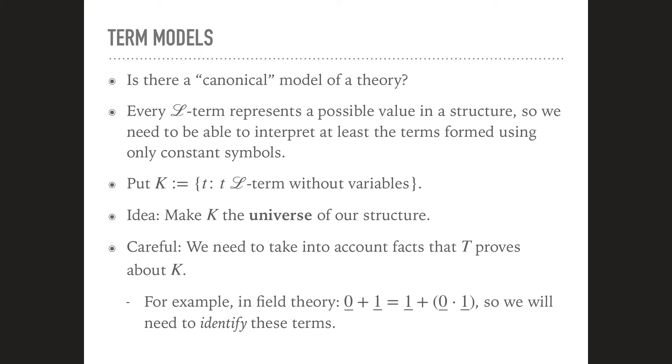In particular, we can ask, is there a canonical model of a theory? Well, if you think a little bit about it, we know that every L-term represents a possible value in a structure. So if you want to give a model of a theory, you have to at least be able to assign every term a value in the structure. So we need to be able to interpret at least the terms formed using only constant symbols. So let's collect those terms in a set. Let's call that set K. So K is the set of all L-terms that don't have any variables.